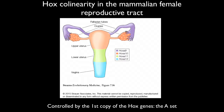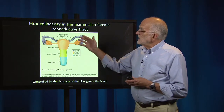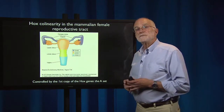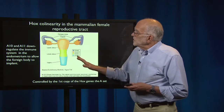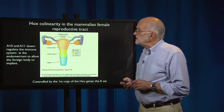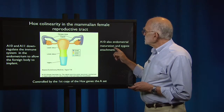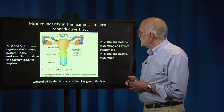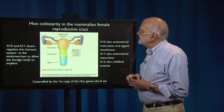When we look at the genes that control the eutherian female reproductive tract, we find some very familiar actors: Hox 9, 10, 11, and 13. When Hox A9 is switched on, the fallopian tubes are formed. When Hox A10 is switched on, the upper uterus is formed. A11 controls the lower uterus and A13 determines the vagina. Hox A10 and 11 also down-regulate the immune system in the endometrium, which helps the zygote to implant. Hox A10 is involved in endometrial maturation and zygote attachment, A11 in endometrial maturation, and A13 in the umbilical arteries.